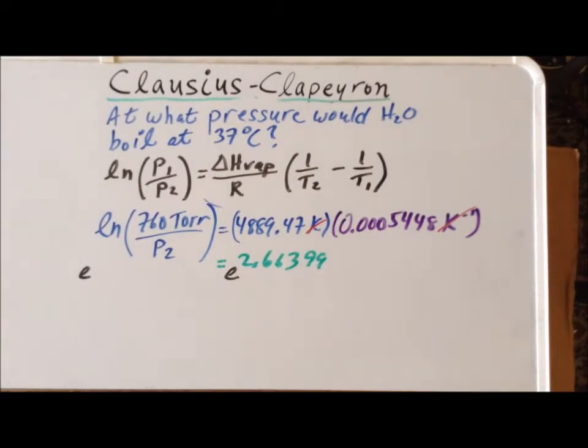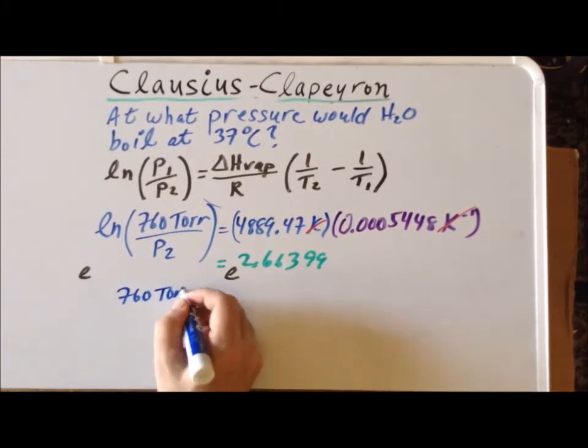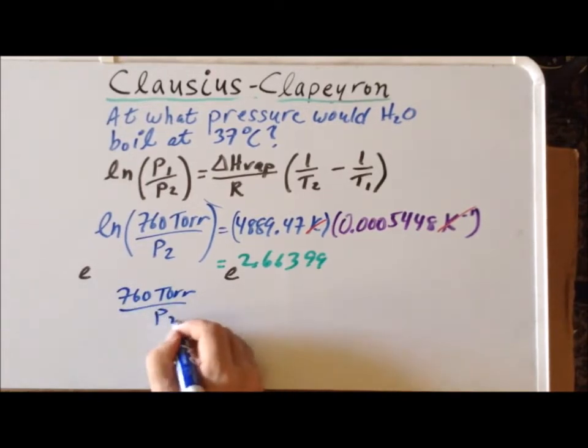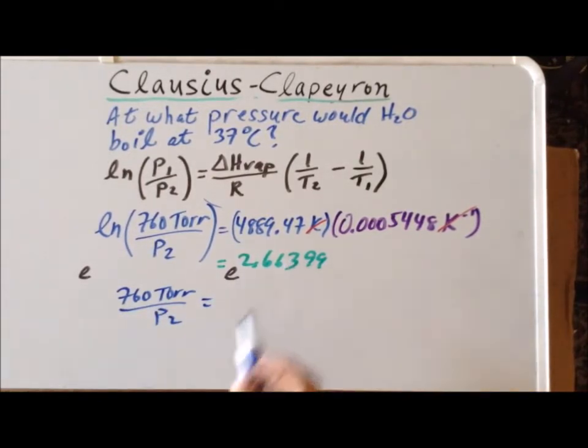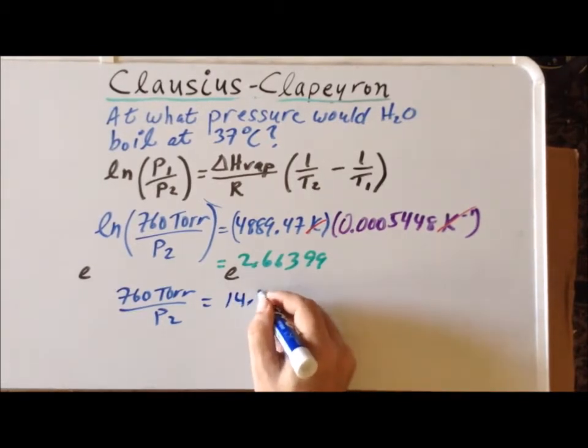And once we do that, we use the property that E to the natural log of X is equal to X itself. So that gives us the left hand side being 760 torr divided by P2 is equal to E to the 2.66399, which is equal to 14.353.